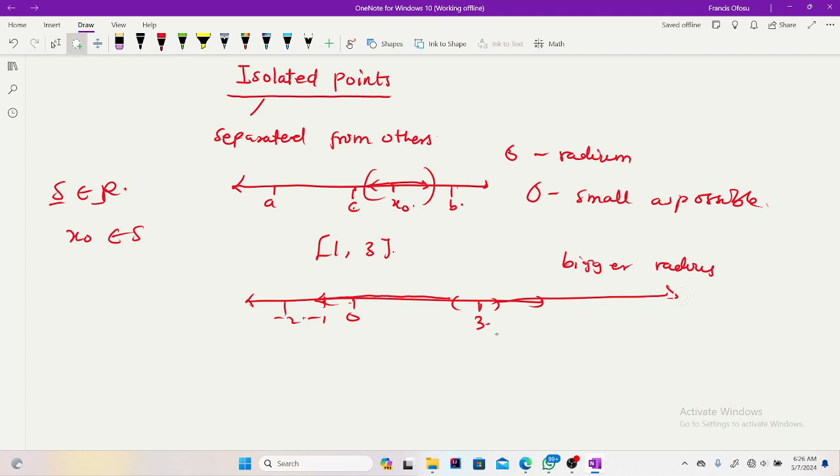A bigger radius will give you the impression that indeed it is not isolated. So to prove isolation, you should use as small radius as possible, because it's an interval. So for sure, you usually have others with the isolated point.